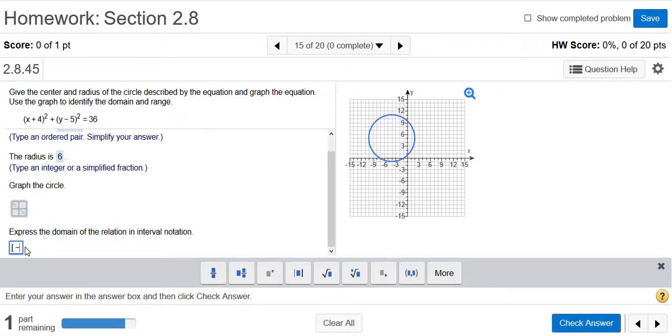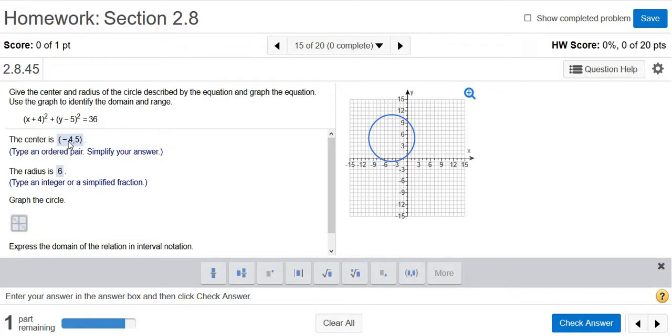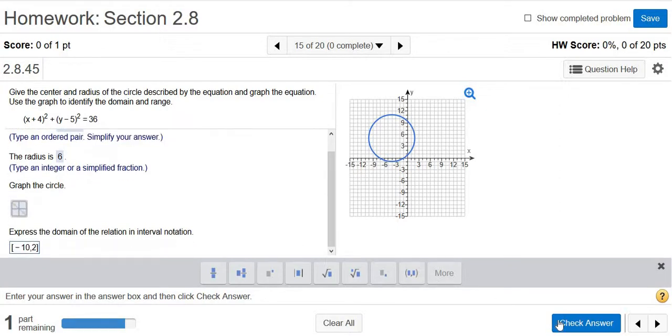So bracket, negative 10 all the way to 2. Now there's a way to check this without the graph. Let me scroll up. The X coordinate of the center is negative 4. So what you can do to find the domain is you subtract. So negative 4 minus 6 is negative 10. Yep, negative 4 plus 6 should be 2. Yep, looks OK. Check answer.